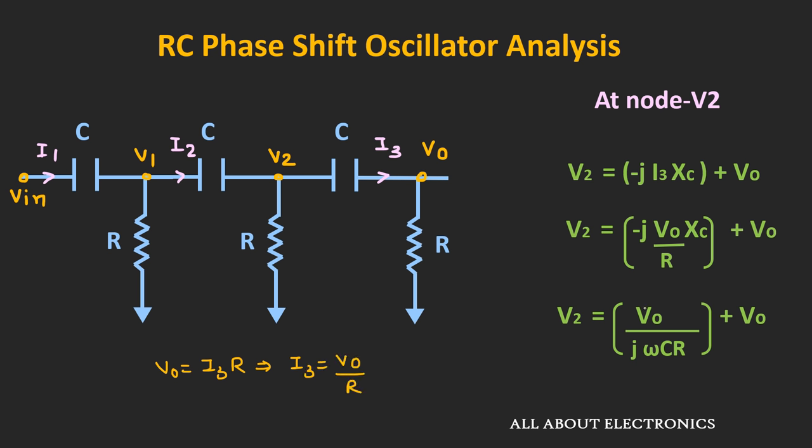By tuning the values of R and C in the feedback network, it is possible to get oscillation at a particular frequency. In RC phase shift oscillators, the value of R is typically kept fixed, and only the capacitor value is changed to achieve the desired frequency. All capacitors are ganged together so that changing one capacitor tunes all of them, allowing the circuit to be tuned to a specific frequency.